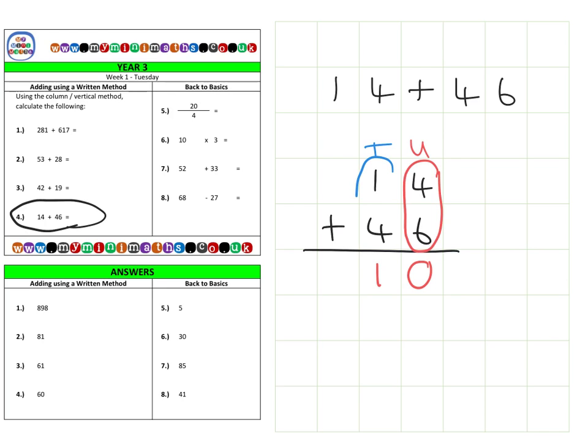And then we have our tens, which is one ten and four tens. No carrying over into the hundreds needed, so it's a simple fifty. And we're going to add these together. Altogether, there's absolutely no units at all, and then in the tens we have ten and fifty, which gives a final answer of sixty.